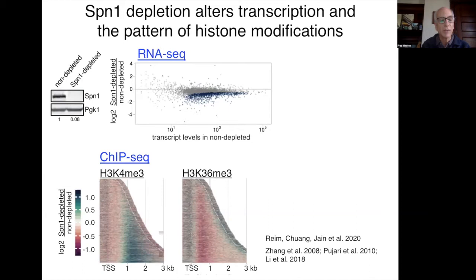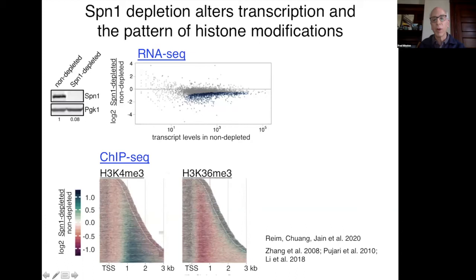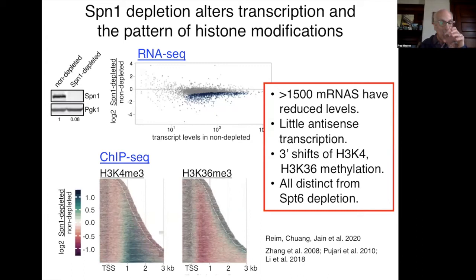You can see that H3K4 trimethylation is shifted 3' and in addition H3K36 trimethylation is also shifted 3'. This is the primary effect we saw for Spt1 depletion on chromatin. So in summary for Spt1: RNA levels are reduced; we saw very little antisense transcription; and from an early collaboration with the Stargell lab, very little evidence of intragenic transcription in Spt1 mutants.